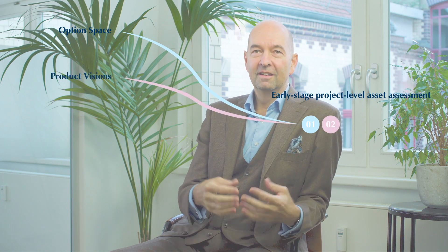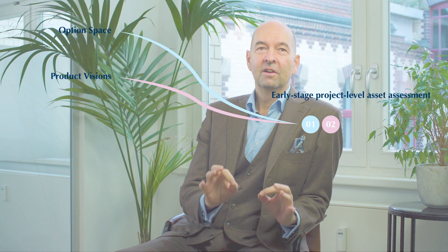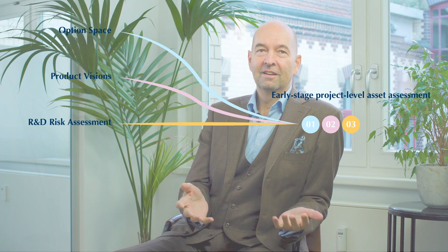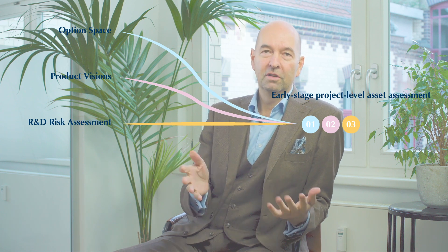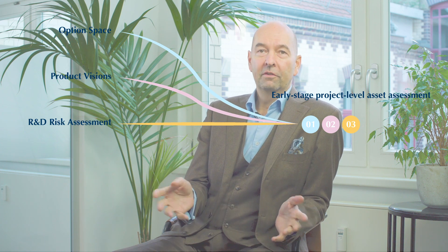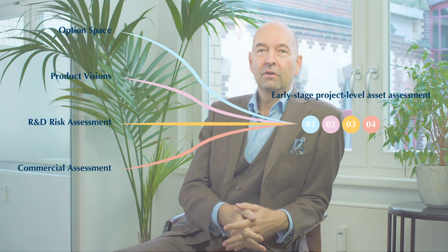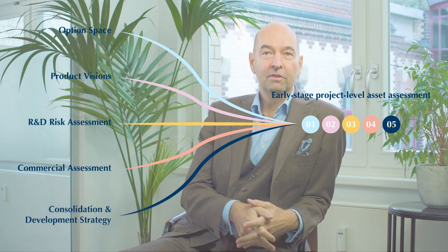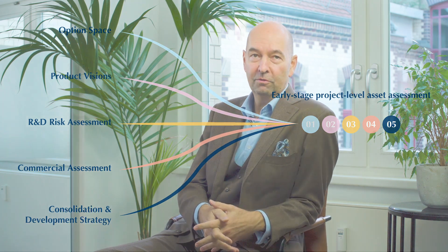For early-stage projects, the assessment aims to answer a few very basic questions. Which indications to pursue in what sequence? We do that in the option space. What is a viable product in each of these indications? This we discuss in product visions. What are the R&D risks of the project and its probability of success to proof of concept, or POC? We cover this in the R&D risk assessment. And then, what is the commercial potential per indication? It's covered in the commercial assessment. How do these dimensions fit together? We do this in consolidation and development strategy.